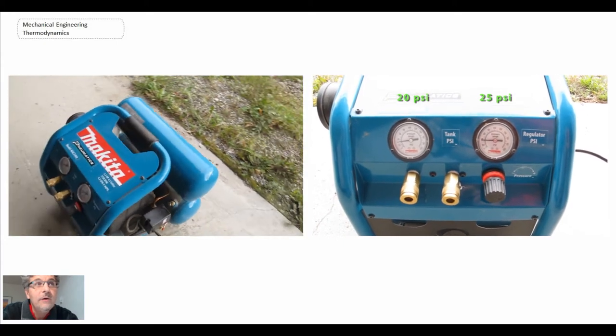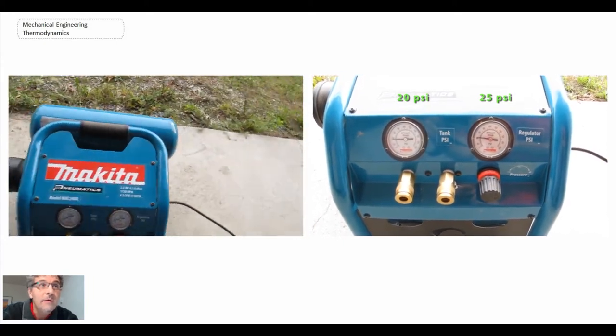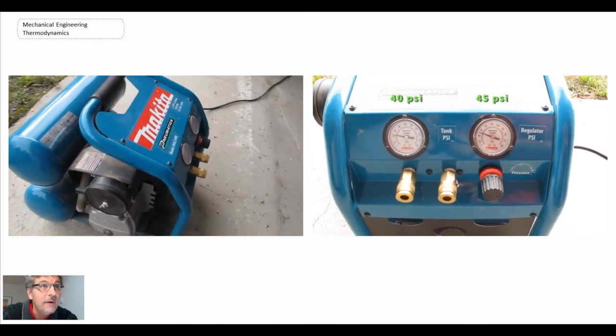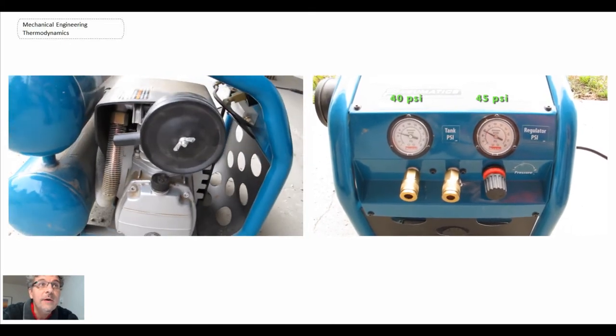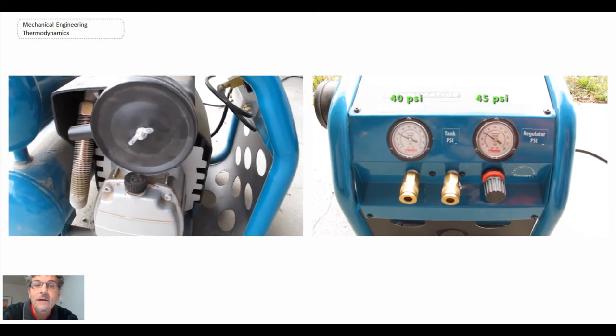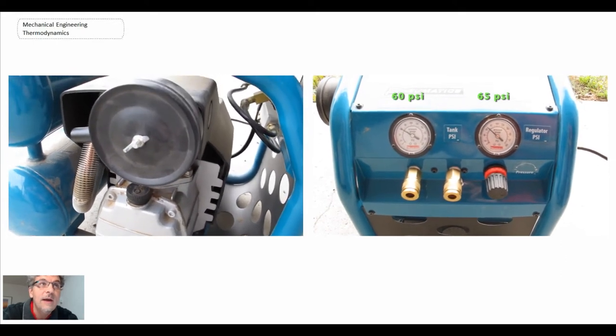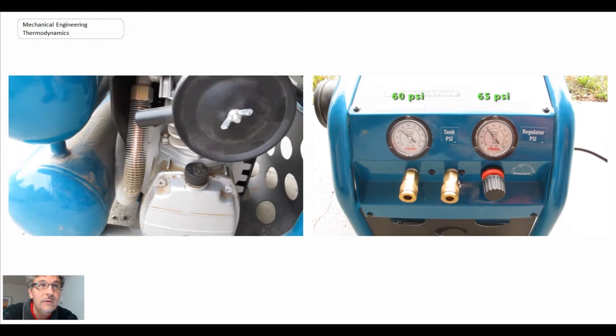As we flip around, you're going to see, first of all, there's the muffler, the crankcase and the piston cylinder device. There's a copper tube coming out with fins on it. That is the compressed air coming out of the compressor, which is then flowing into a tank.